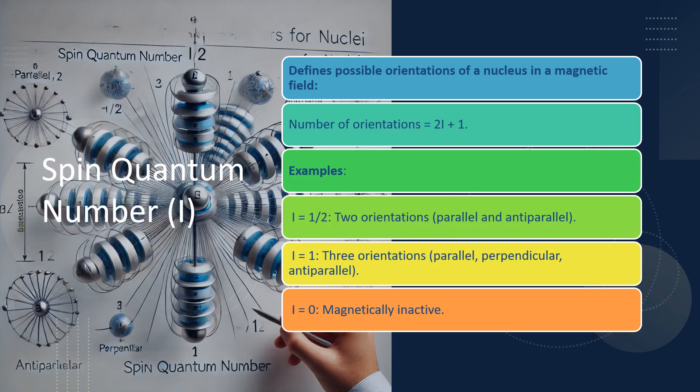What is the spin quantum number? It's a value that describes the angular momentum of a nucleus. Different nuclei have different spin quantum numbers, such as 1/2, 1, or 0. A nucleus with a spin of 1/2, like hydrogen, behaves differently from one with a spin of 1, like deuterium. This number also determines how many energy levels the nucleus can occupy in a magnetic field, which we'll explore shortly.